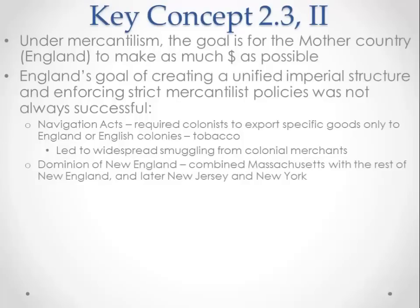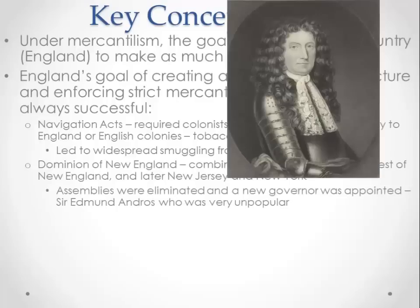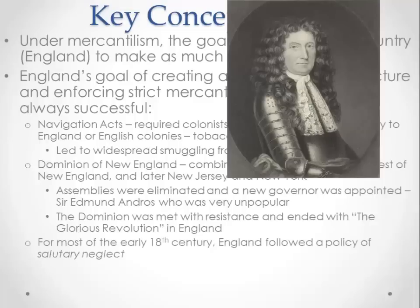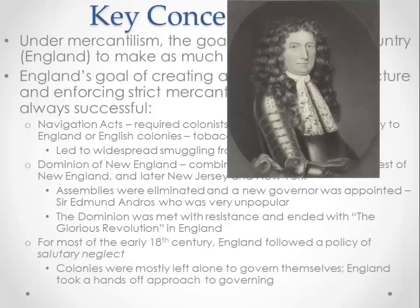The Dominion of New England was England's idea to combine many northern colonies into one, merging Massachusetts with the rest of New England and later adding New Jersey and New York. It was governed by Sir Edmund Andros, who eliminated assemblies and appointed a new governor — very unpopular. The colonists overthrew the Dominion of New England; Andros even tried to escape by dressing as a woman. The Dominion ended at the same time as the Glorious Revolution in England. For most of the 18th century, England followed a policy of salutary neglect, taking a hands-off approach and not interfering in day-to-day colonial operations.